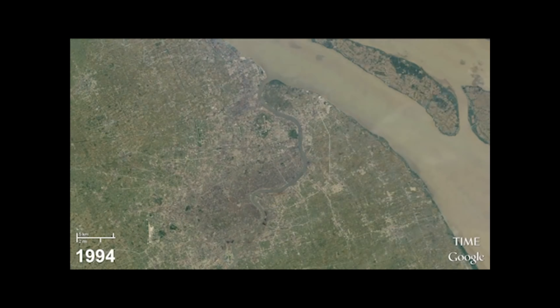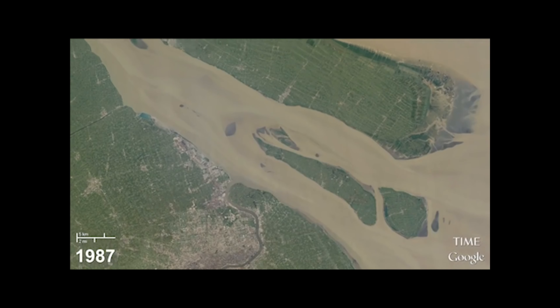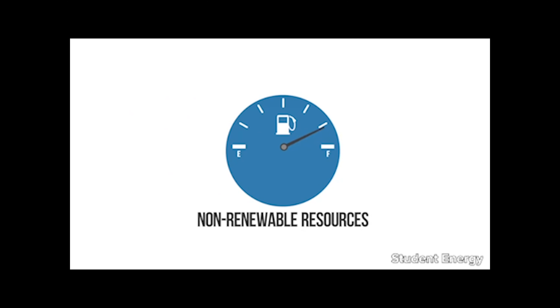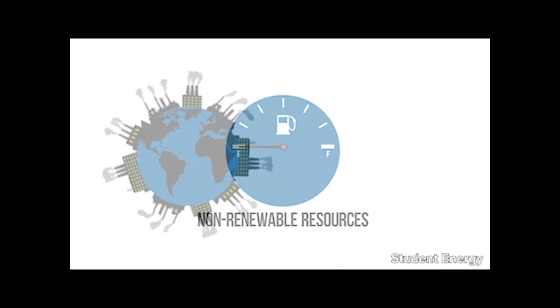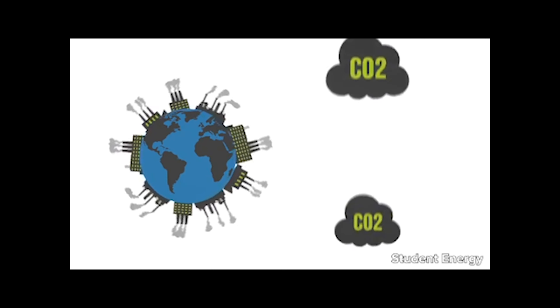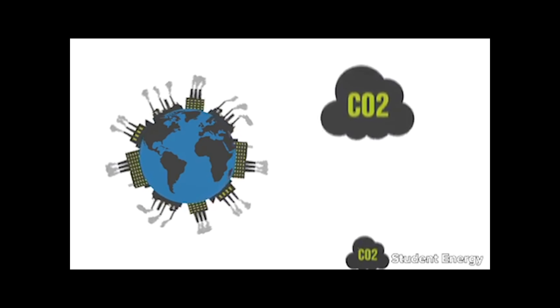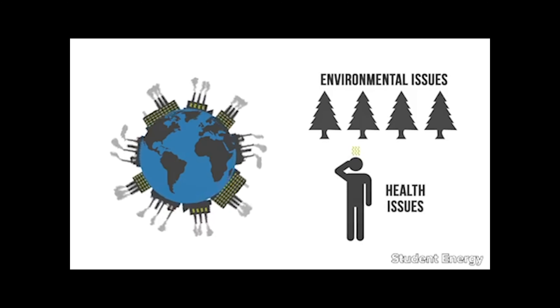There is no doubt that coal, oil, and natural gas have brought about countless benefits and advancements. However, we're burning through them approximately one million times faster than nature can produce them. Eventually, we will run out. Additionally, the carbon dioxide and pollution associated with our current energy system have many negative impacts on the planet.